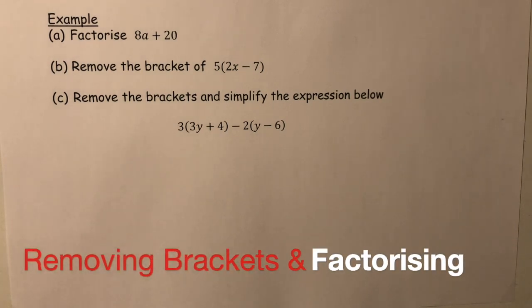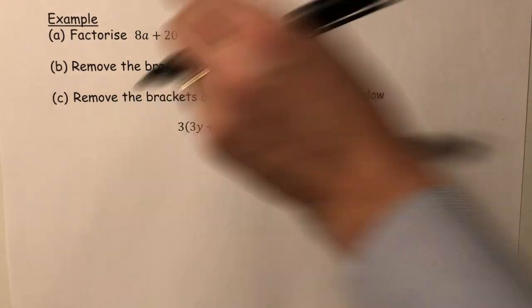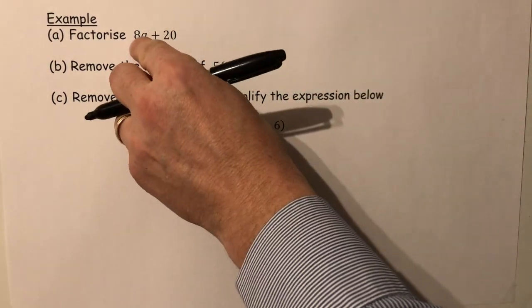A combination here of the simplest of the factorization and the simplest of removing the brackets that we have on the examination paper. Starting with the factorization here, we look for a common factor, the largest common factor. So whilst two goes into both numbers, the highest number that goes into both there is four.